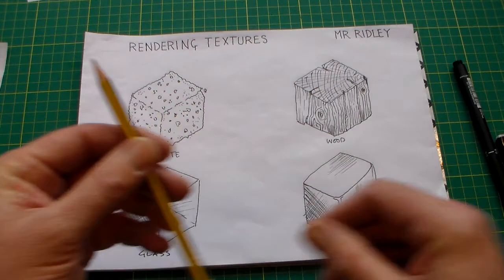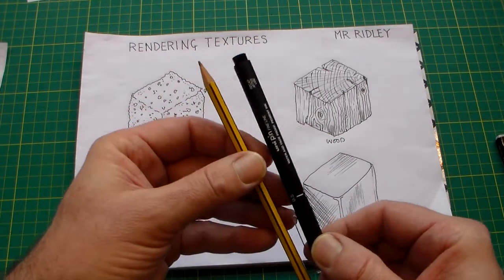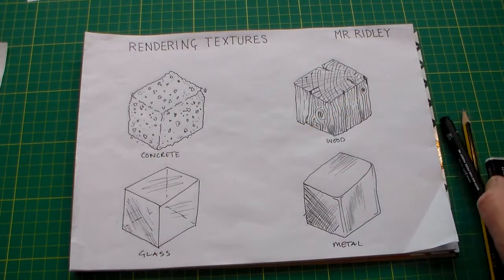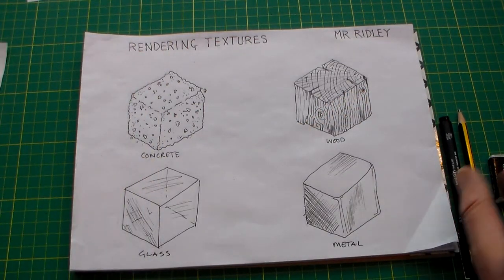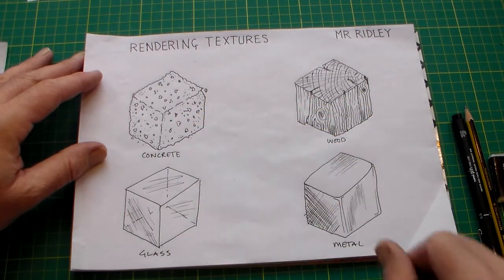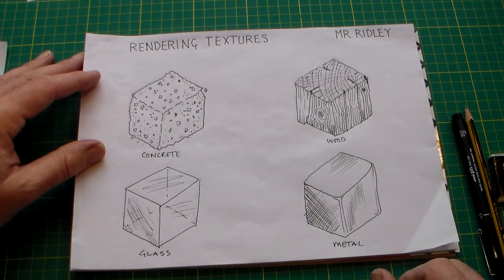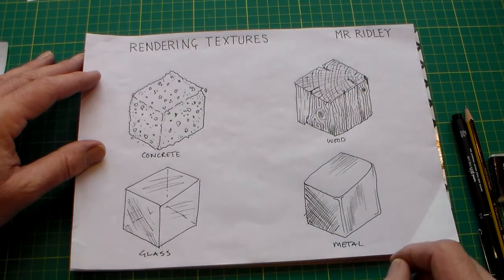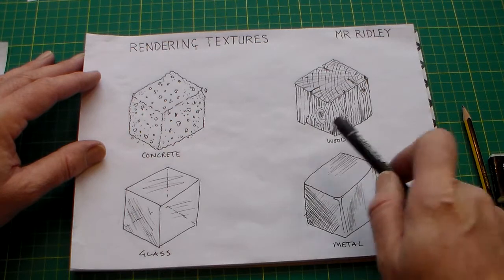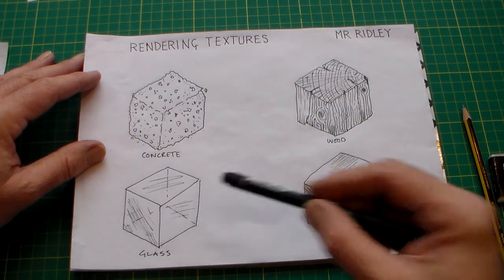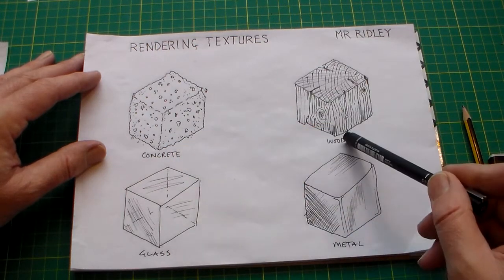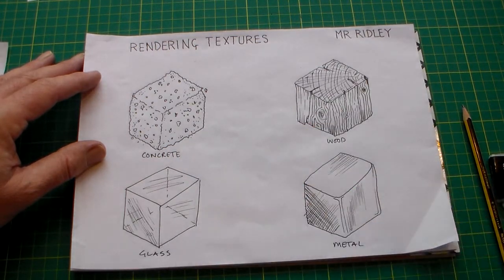What we're going to do is use either a pencil or a fine liner — you might also need a rubber and a ruler. We're going to draw four isometric cubes and then render them using texture, using a pencil or a fine liner, to make them resemble a material of our choice. The three materials I've chosen here are concrete, wood, glass, and metal.